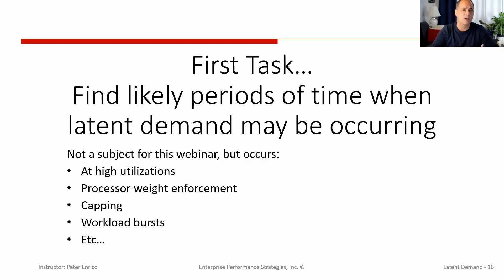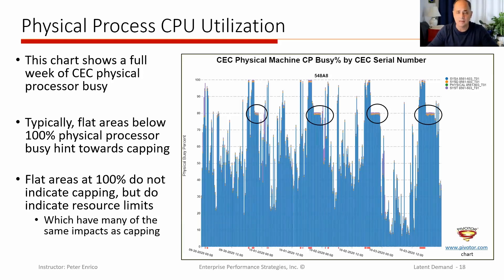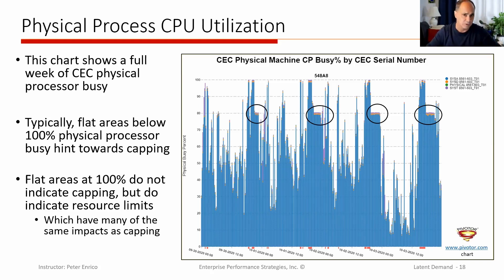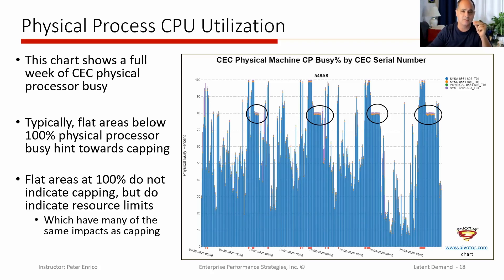Let's look at what's some of the first things we want to do: find out if you even have latent demand and if so, how much. One of the first things we like to look at is busyness. Typically, when we think about latent demand, most analysts think in terms of processors — CPU latent demand — because that's our most expensive resource. There are other types of latent demand on storage, logical resources, and IO, but it's typically processors that we're most interested in. So one of the first things we always do is look at how busy the machine is and what are the patterns of activity of processor utilization.